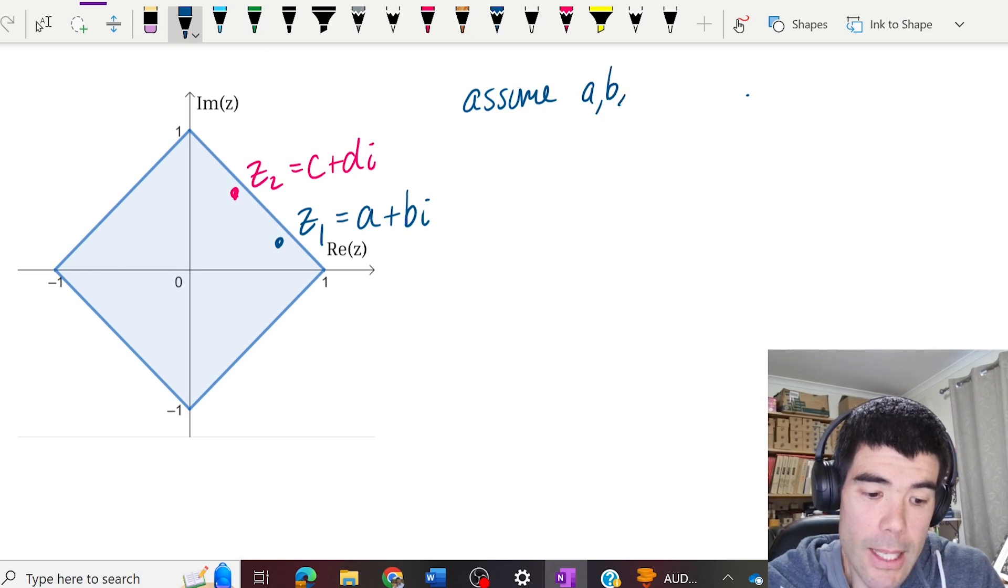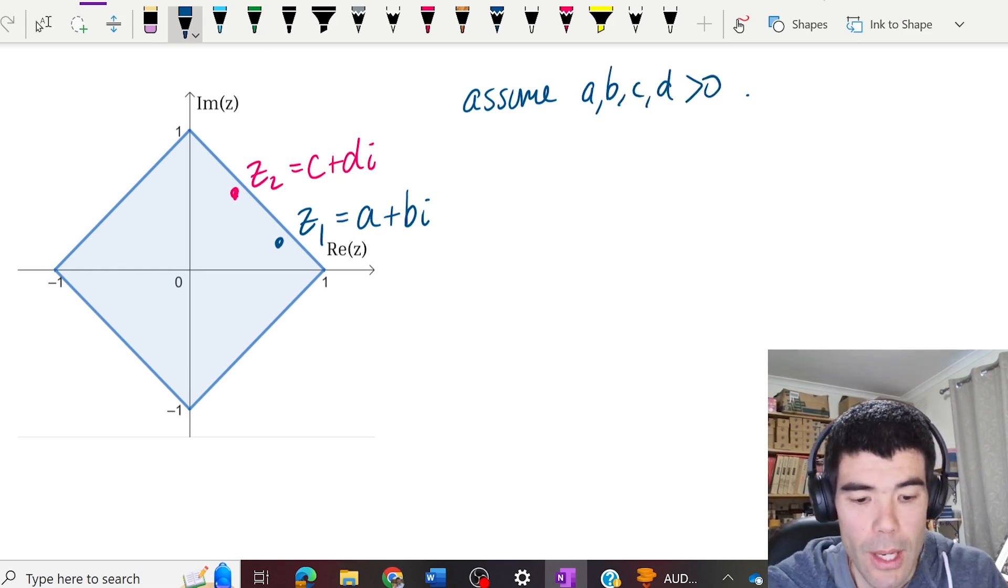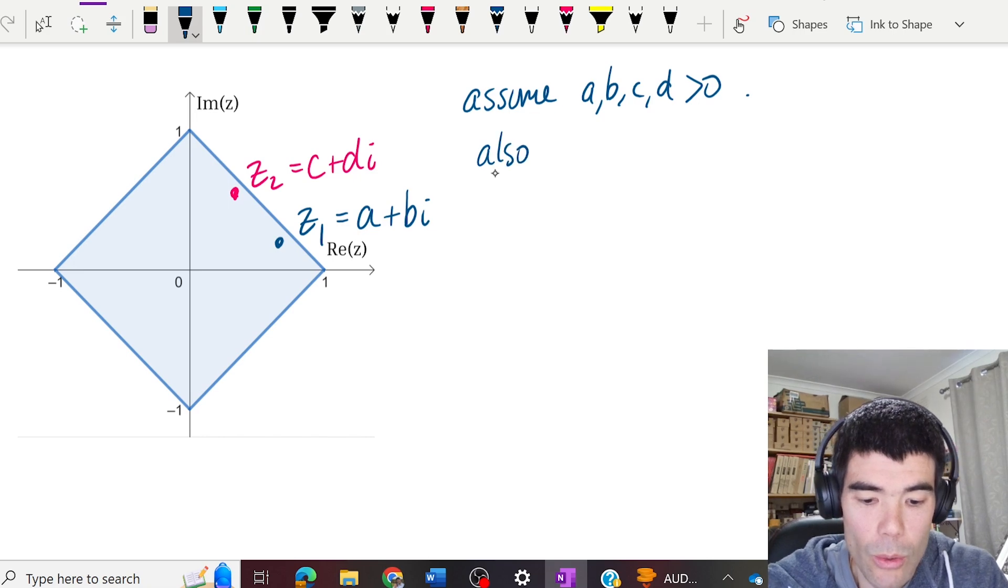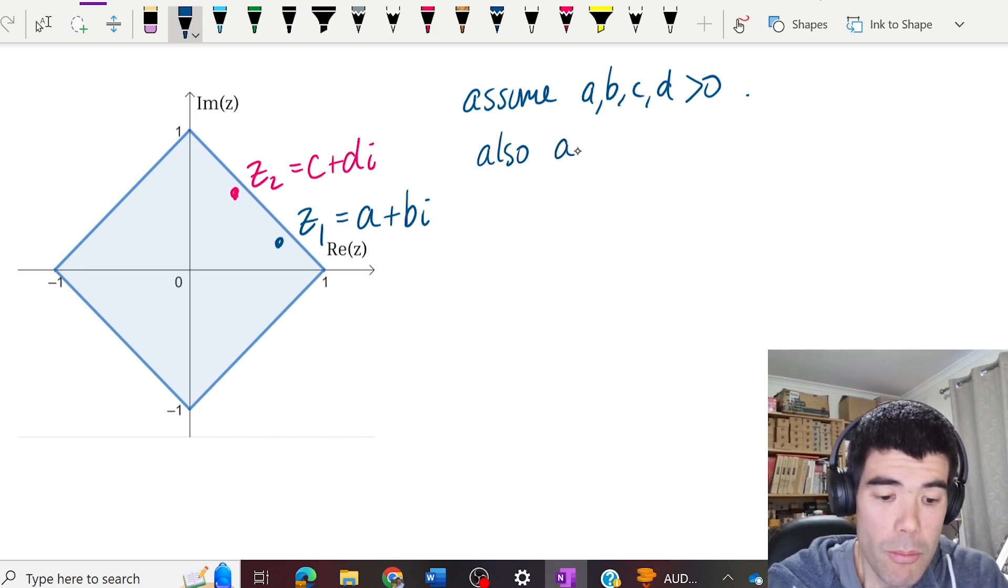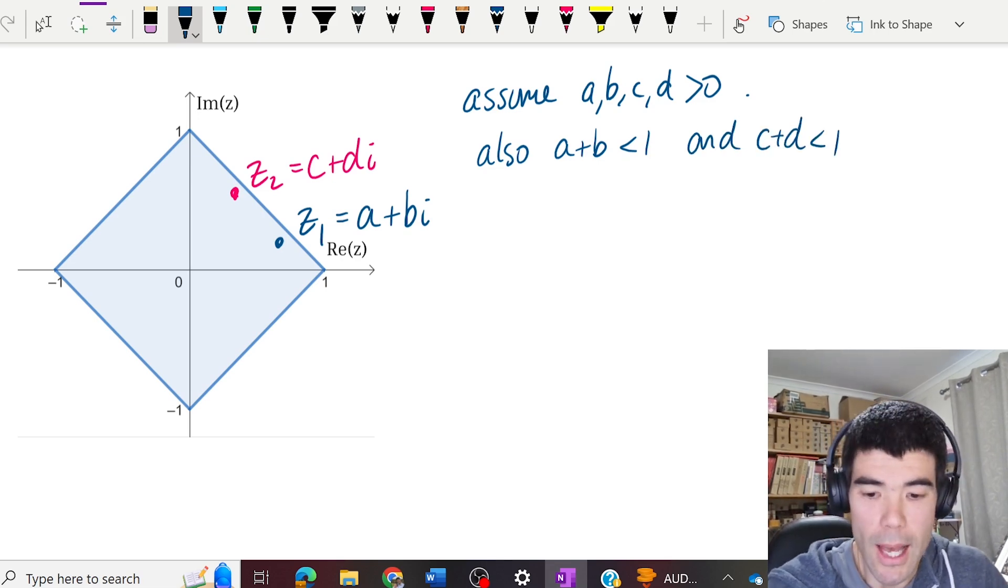So what we're going to do now is assume that both our complex numbers, z1 and z2, are in the first quadrant. And what we're going to do now is actually use the cartesian form or the rectangular form. So if we assume z1 is a plus bi, z2 is c plus di, and we're going to assume that a, b, c and d are all positive because we're in the first quadrant.